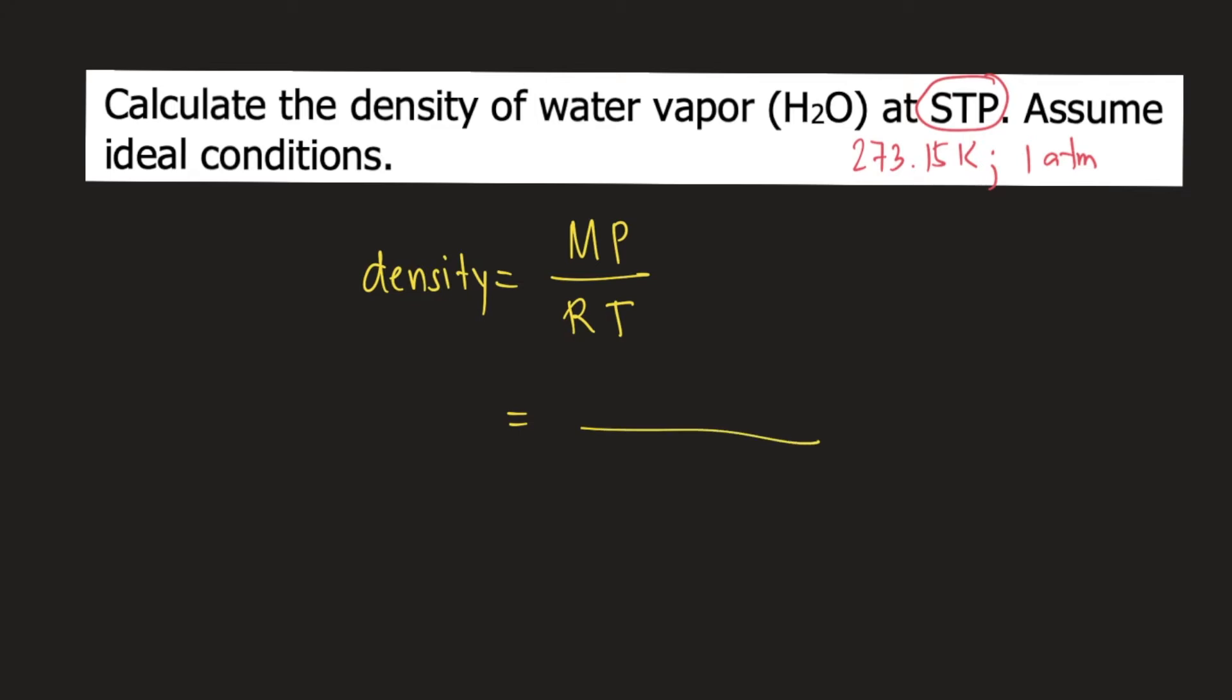M is again molar mass. The molar mass of our substance, H2O, is 18.016 grams per mole.